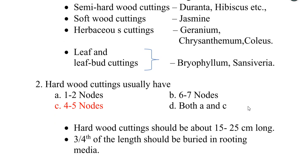Second one. Hardwood cuttings usually have 4 to 5 nodes. Hardwood cuttings should be about 15 to 25 cm long, and 3/4 of the length should be buried in the rooting media.